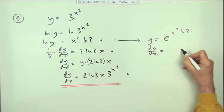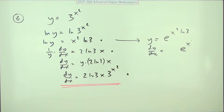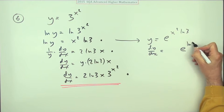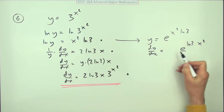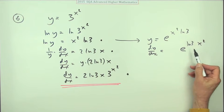And then differentiating that, dy/dx equals, so that will stay as e to the x squared ln 3. Let me write the coefficient first, ln 3 x squared multiplied by the derivative of that.